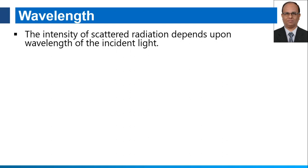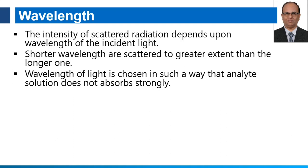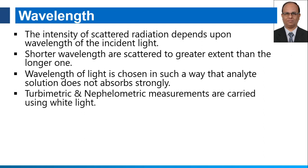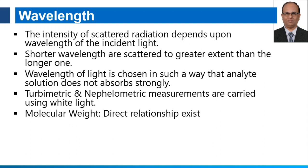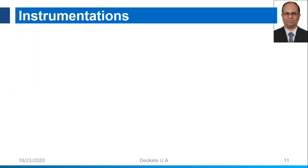The second parameter is wavelength. The intensity of scattered radiation depends upon the wavelength of incident light. Shorter wavelengths are scattered to a greater extent than longer ones. The wavelength of light is chosen in such a way that the analyte solution does not absorb strongly. Turbidometric and nephelometric measurements are generally carried out using white light. For molecular weight, there is a direct relationship with the scattered radiation. Light scattering decreases by distance R² from the light-scattering particles to the detector, so we should know exactly the distance from the source to the detector.